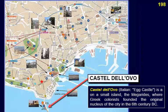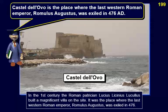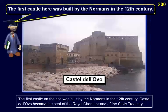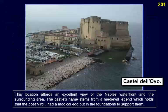Castel dell'Ovo — Italian for 'Egg Castle' — is on a small island, the Megaride, where Greek colonists founded the original nucleus of the city in the sixth century BC. In the first century, the Roman patrician Lucius Licinius Lucullus built a magnificent villa on the site. It was the place where the last western Roman Emperor, Romulus Augustulus, was exiled in 476. The first castle on the site was built by the Normans in the 12th century. The castle's name stems from a medieval legend that the poet Virgil had a magical egg put in the foundations to support them.